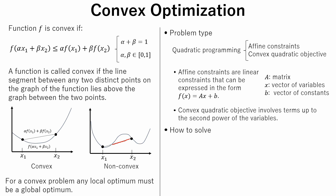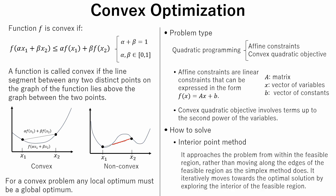There are several methods to solve convex optimization problem. One of the methods that is often used is interior point method. The interior point method approaches the problem from within the feasible region, rather than moving along the edges of the feasible region as the simplex method does. It iteratively moves towards the optimal solution by exploring the interior of the feasible region.